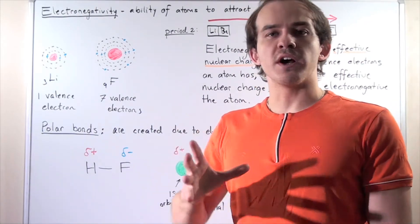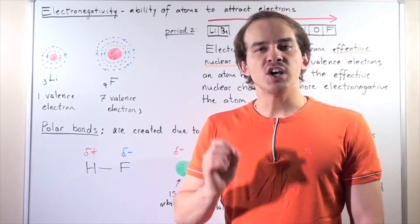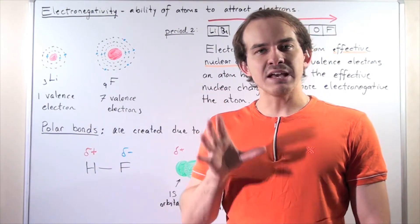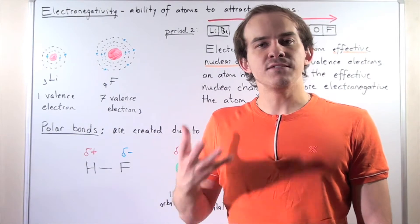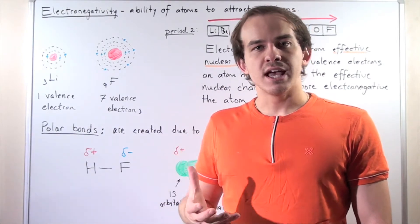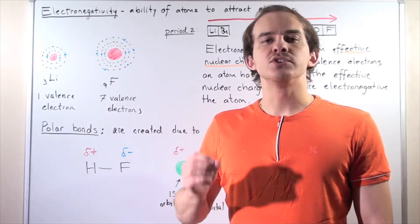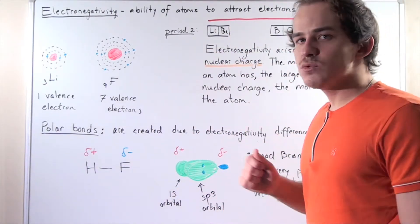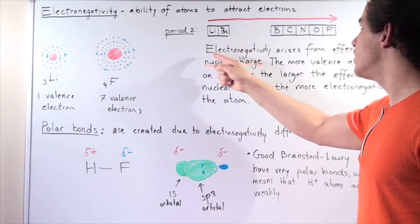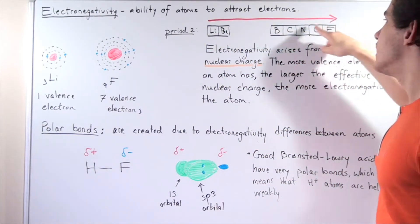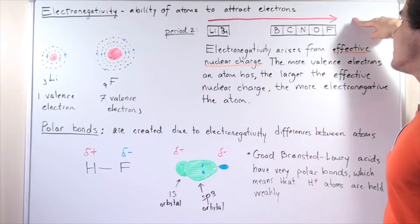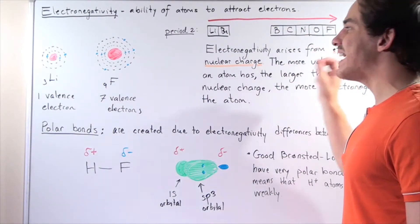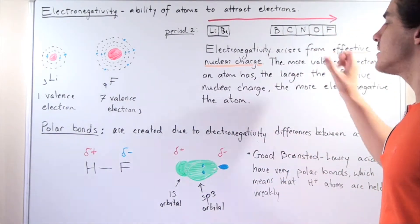According to our periodic trends, as we go up a group or across a period from left to right on the periodic table, the electronegativity of the atoms increases — their ability to attract electrons increases. For example, as we go from lithium to beryllium all the way to fluorine in the second period, electronegativity increases. In fact, fluorine and oxygen are the two most electronegative atoms on the periodic table.